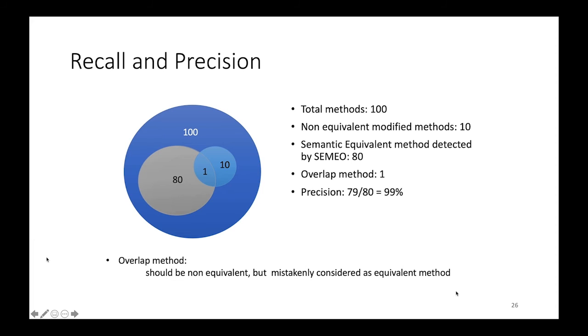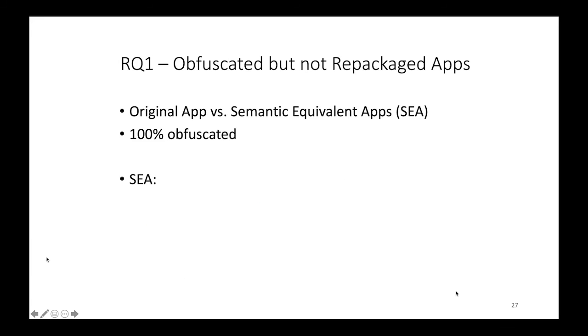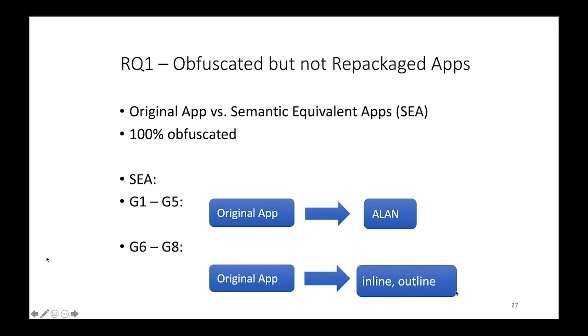So let's look at RQ1. So we obfuscate 100% of the app, which means that every method get obfuscated. So for G1 and G5, what we did is we just send the original app through Allen and we configure it to do group 1, which is one type at a time, group 2 is two types on top of each other, group 3 is three types on top of each other, so on and so forth. Then we have G6 and G8, where we have the original app that our undergraduate student go through and then apply inlining and outlining.